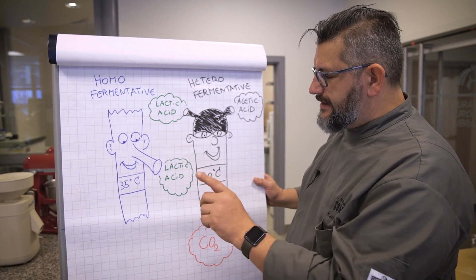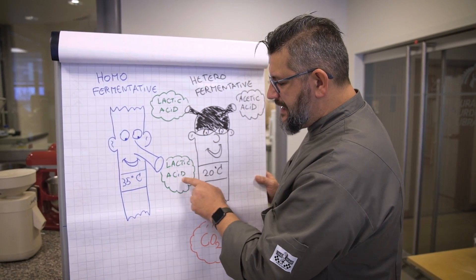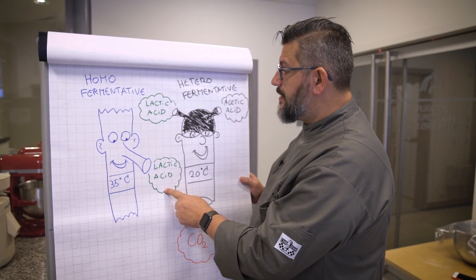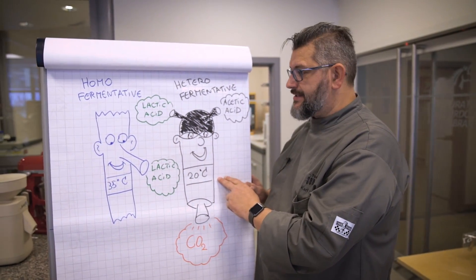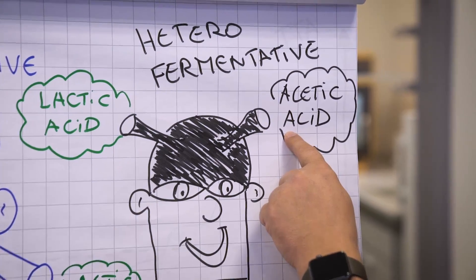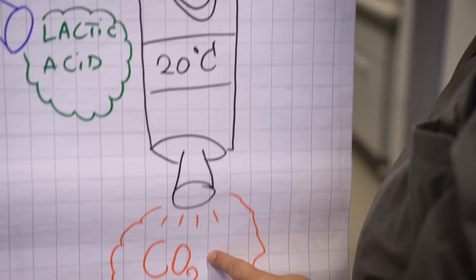Now, what is the function? The homofermentative lactic acid bacteria, as you can see, can only produce lactic acids. Whereas the heterofermentative can produce lactic acid, acetic acid, and sometimes they even produce CO2.